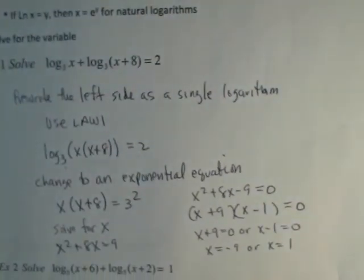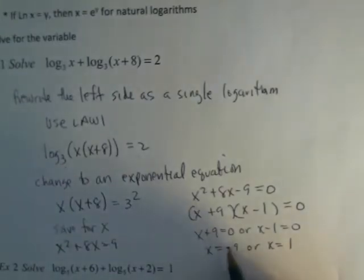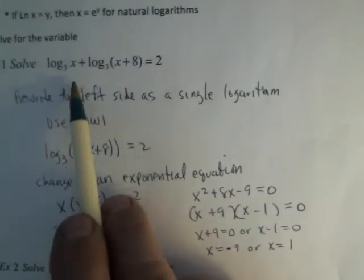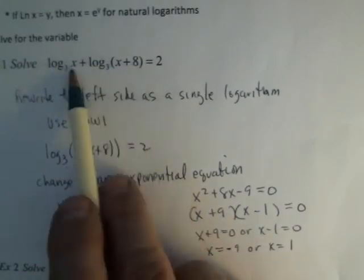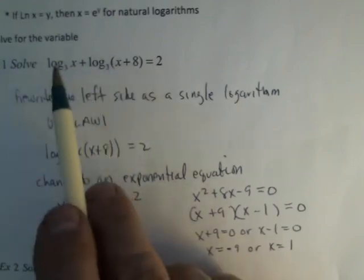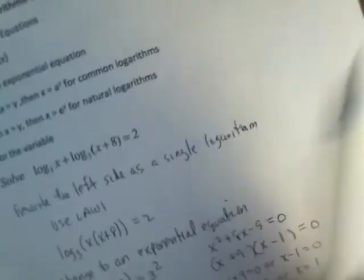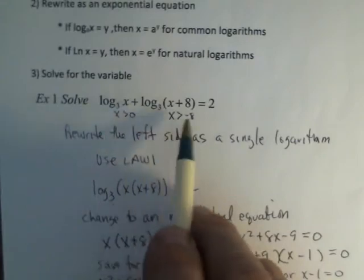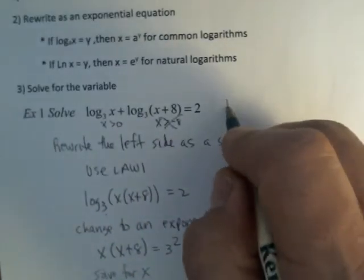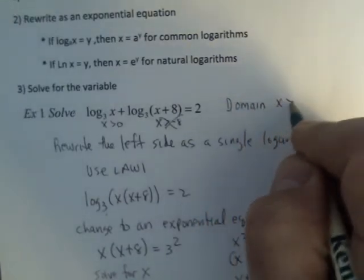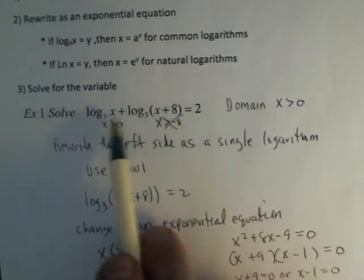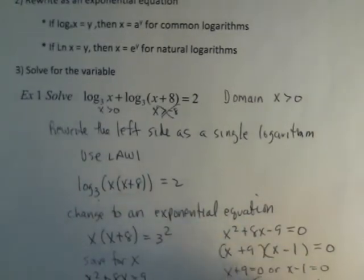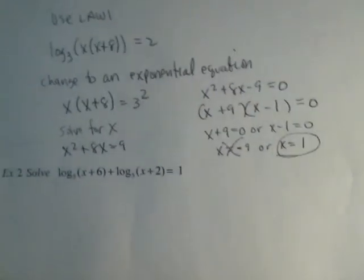Now, the problem here is, we've got to make sure both of these solutions will work. So if I look up here to the original equation, our domain, whatever we take the logarithm of has to be greater than 0. So therefore, my domain for this one is x is greater than negative 8. For here, x is greater than 0. Well, to work in both of them, they must be bigger than 0. Sorry about that. So my domain is x is greater than 0. Because it's got to be able to work both. And I always pick the larger of the two. So therefore, the negative 9 does not work. And 1 is the only true solution to this particular equation.